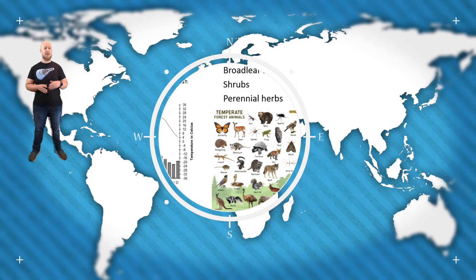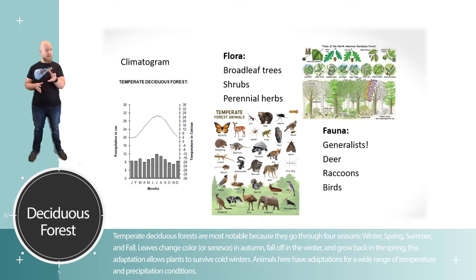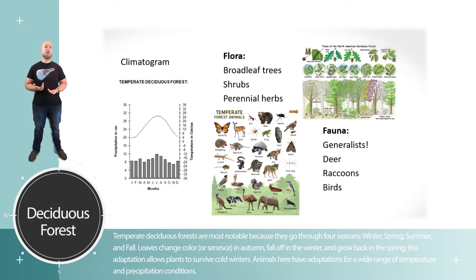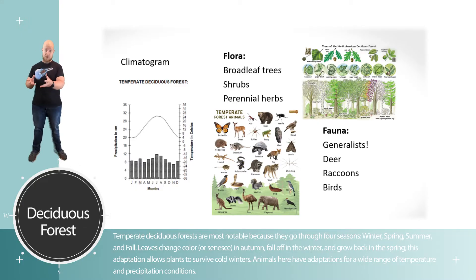The temperate deciduous forest has four seasons: a cold winter and a warm summer, and in between you get a spring and a fall — that's where the majority of rain tends to fall. The dominant plant community is deciduous trees, or trees that lose their leaves to conserve water during cold winters. Animals here tend to be migratory birds, but year-round you get deer and generalists like raccoons.